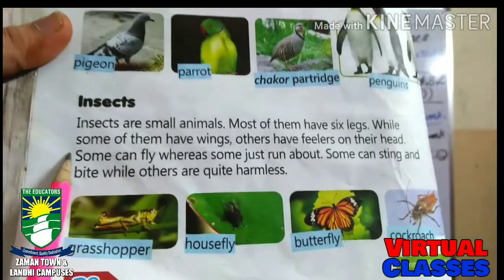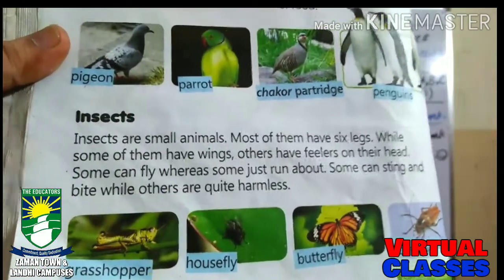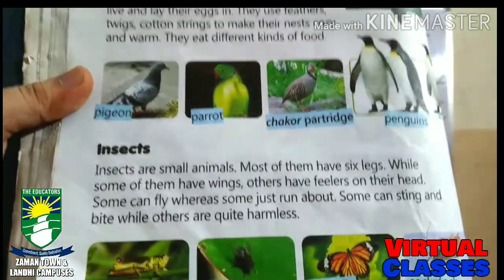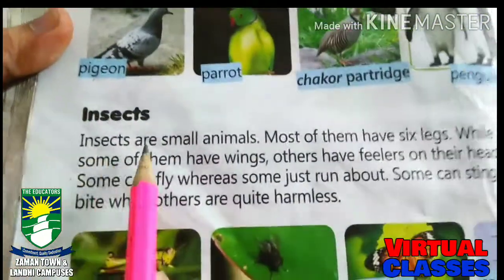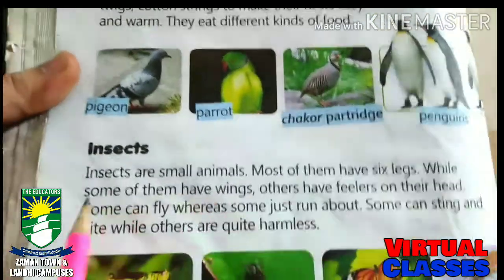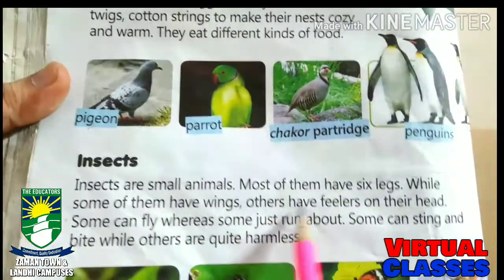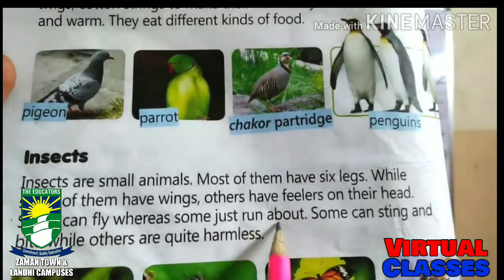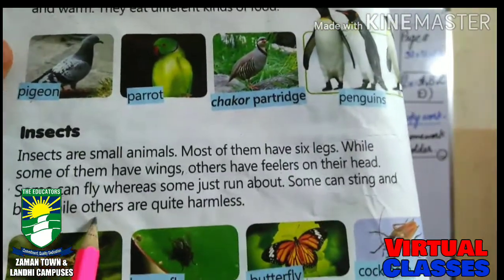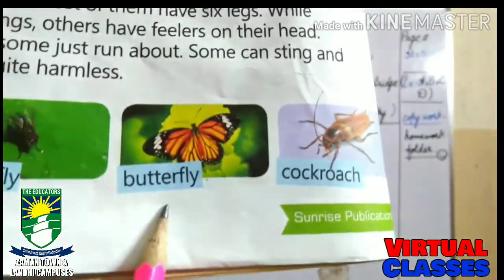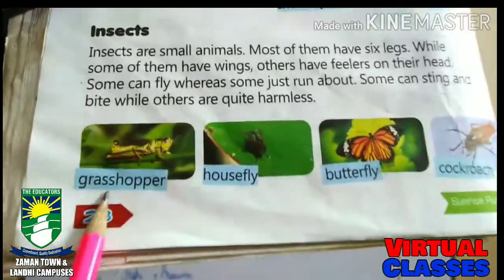Now we are going to learn about insects. In our houses sometimes we see ants and cockroaches — these are insects. Insects are small animals. Most of them have six legs, while some have wings. Some can fly whereas some just run. Some can sting and bite while others are quite harmless. Examples are grasshopper, housefly, butterfly, and cockroach — these are all insects.